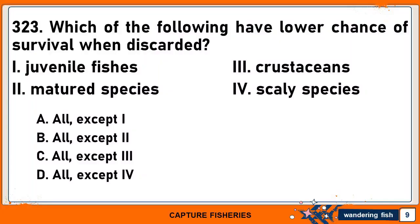Which of the following have a lower chance of survival when discarded? 1. Juvenile fishes. 2. Matured species. 3. Crustaceans. And 4. Scaly species. The choices are: A. All except 1. B. All except 2. C. All except 3. Or D. All except 4. The correct answer is A. All except 1.